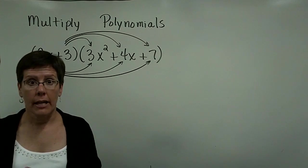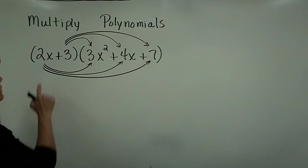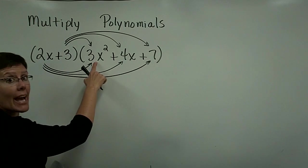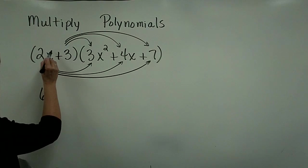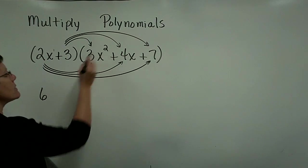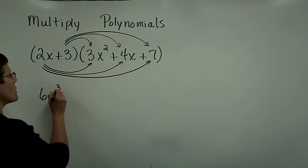So let's go ahead and take 2x times 3x squared. So the 2 times the 3 is 6. Remember, this is x to the first times x to the second gives you x to the third.